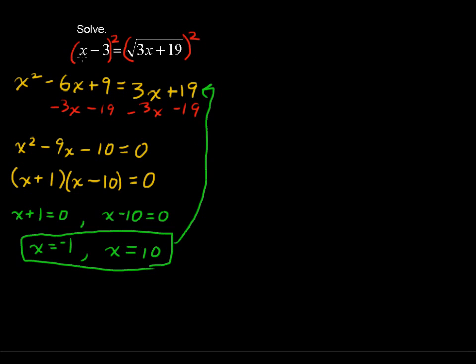So without the red, that is just the original equation here. So I'm going to plug in x equals negative 1 in for x here and see if that is a solution. So I have negative 1 minus 3 equals, and I put a little question mark saying, does it equal? The square root of 3 times negative 1 plus 19, that's the square root of all of that.